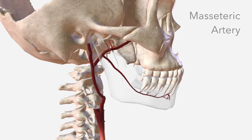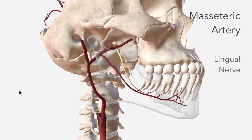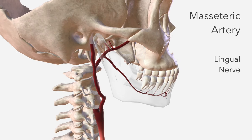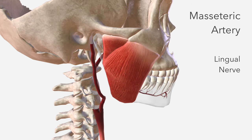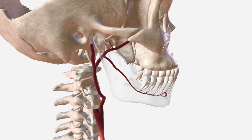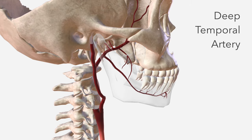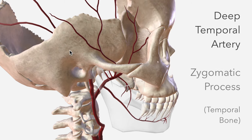Next, we have the masseteric artery, which isn't included in this model, but accompanies the lingual nerve in its path before going on to supply the masseter muscle. We also have the pterygoid artery, which supplies the medial and lateral pterygoid muscles. Then the deep temporal artery — its anterior and posterior branches — which both pass behind the zygomatic process of the temporal bone, supplying the muscles in this region and anastomosing with the middle temporal artery.